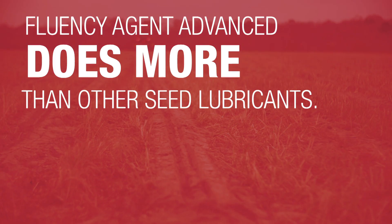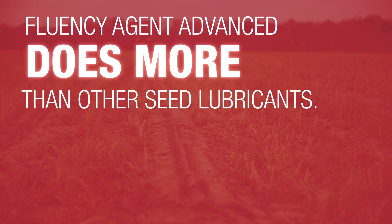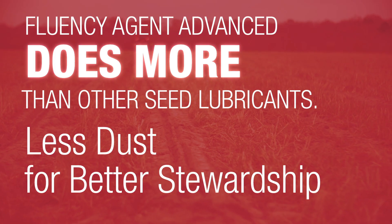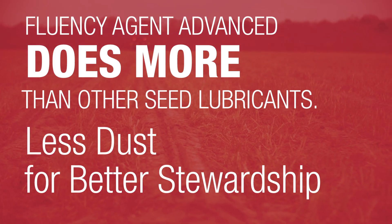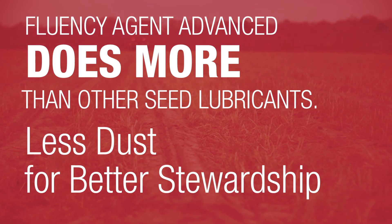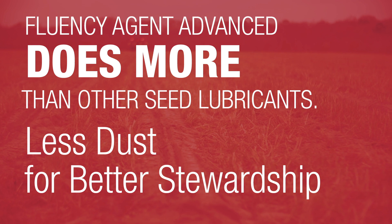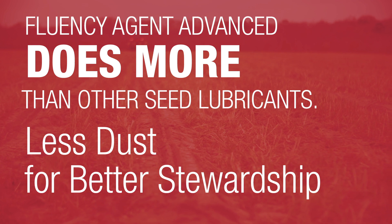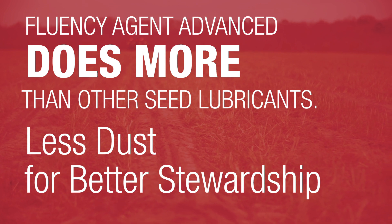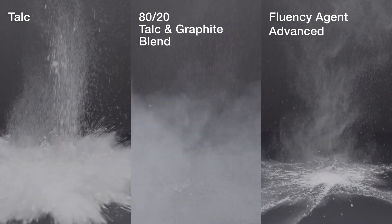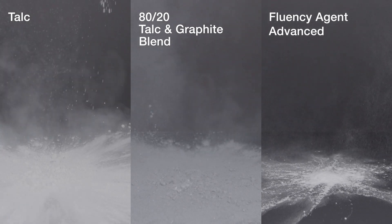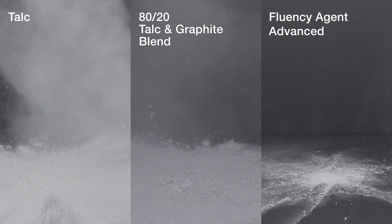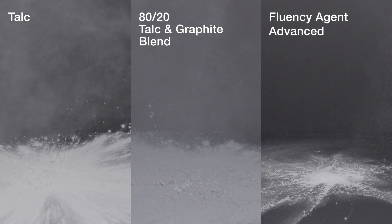In addition, Fluency Agent Advanced further reduces the amount of dust and active ingredient potentially released during planting, thus reducing the potential exposure to pollinators. When compared to traditional seed lubricants like talc, graphite, and talc-graphite combinations, the difference is clear.